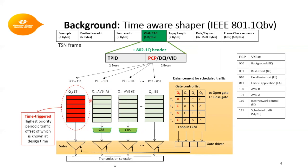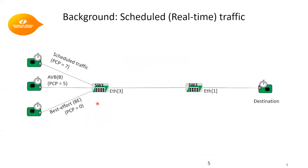The architecture illustrated in this slide exists at each egress port of a TSN switch. For simplicity, we show four queues: a dedicated queue for scheduled traffic with the highest priority of 7, class AVB-A, class AVB-B, and the lowest priority best-effort class. We have a gate control list with timestamped gate states that drive the gates to allocate the link bandwidth to each queue.